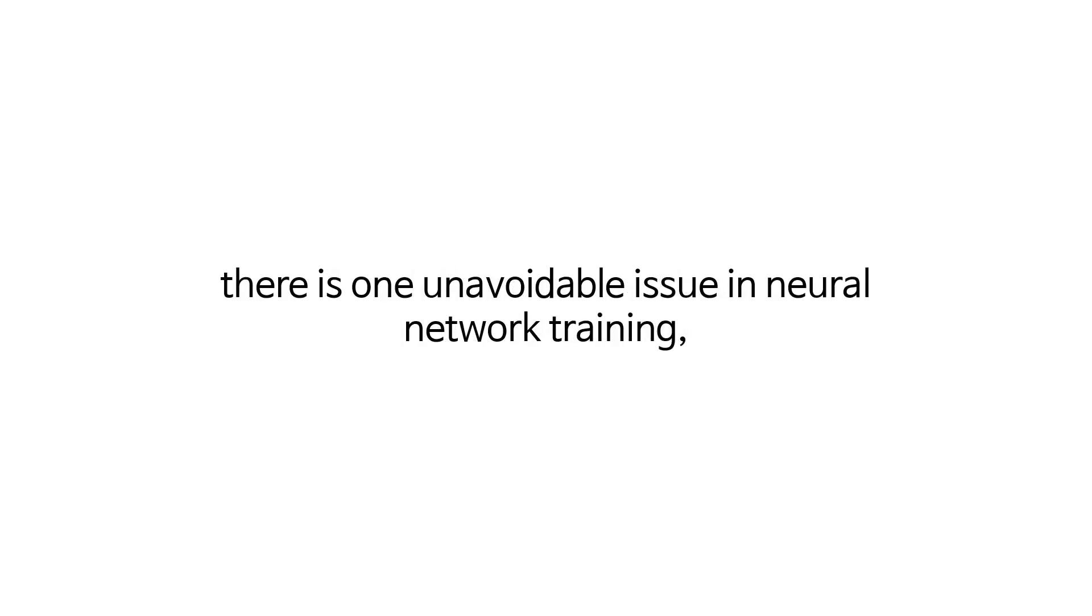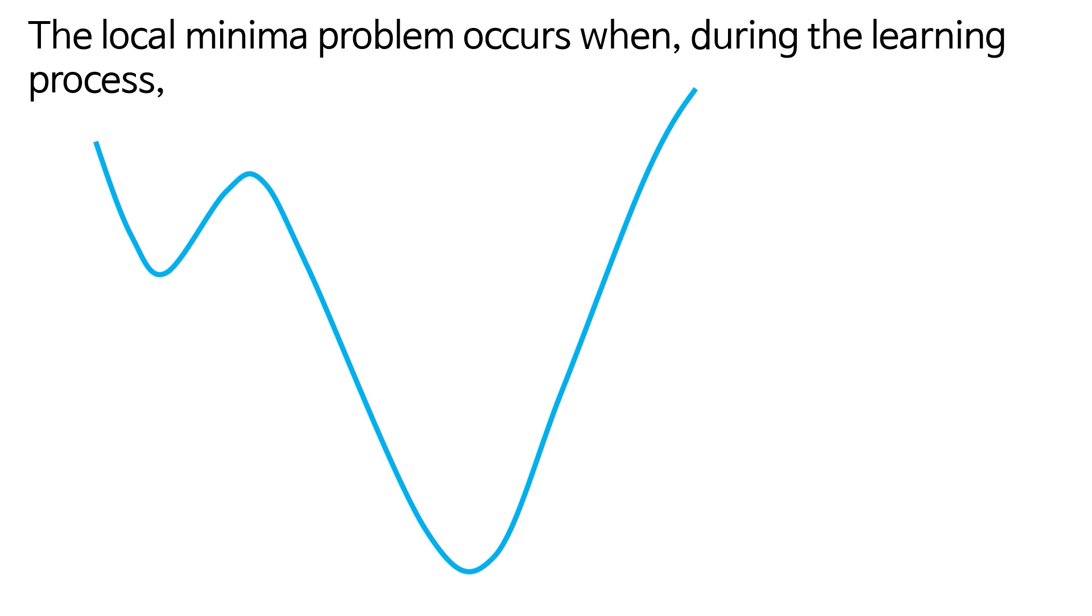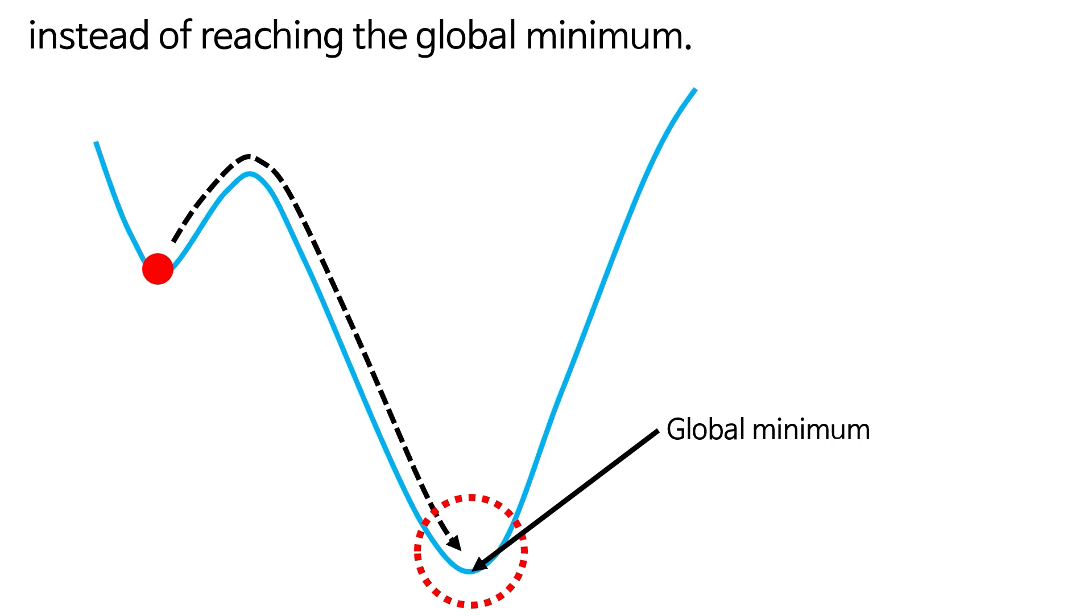As briefly mentioned in the gradient descent video, there is one unavoidable issue in neural network training, which is the local minima problem. The local minima problem occurs when, during the learning process, the model gets stuck at a local minimum of the loss function instead of reaching the global minimum.